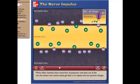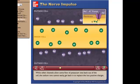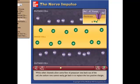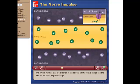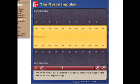While other channels allow some flow of potassium ions back out of the cell, the sodium ions cannot easily get back in to replace the lost positive charges. The overall result is that the exterior of the cell has a net positive charge and the interior has a net negative charge.